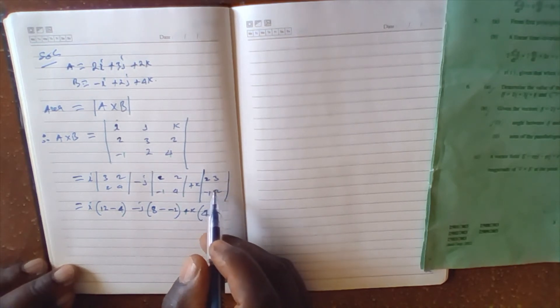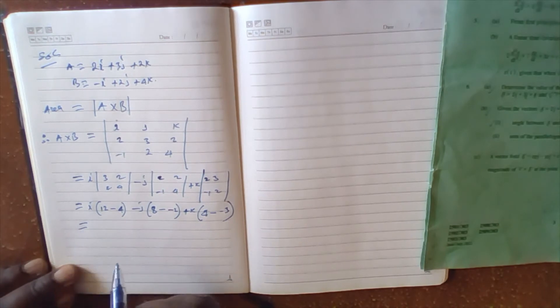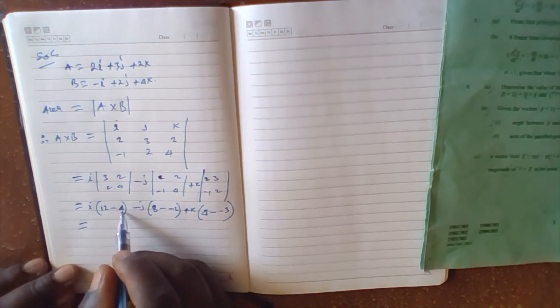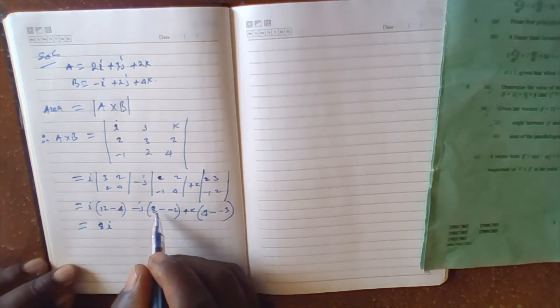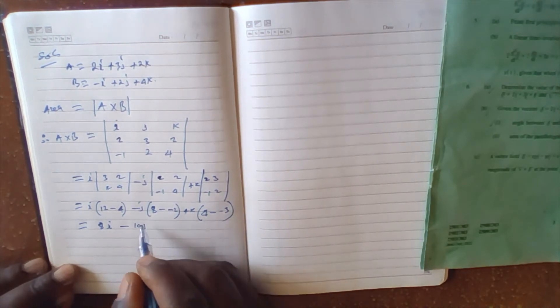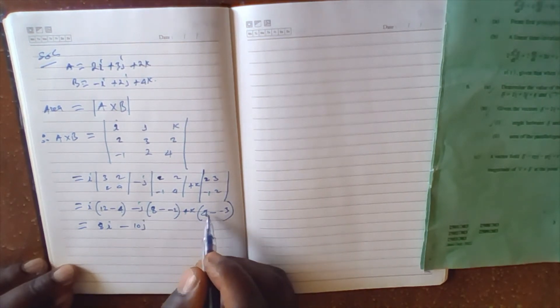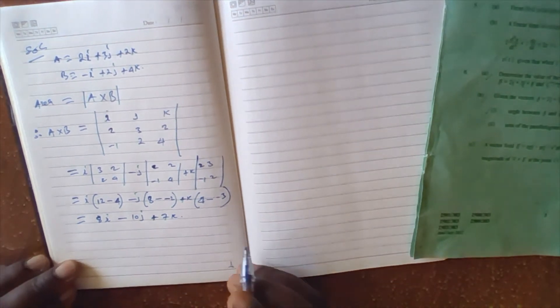This equals to 12 minus 4 equals 8, so this is 8i. Then minus, and minus becomes plus, so we have minus 10j, and then 4 minus negative 3, so it will be plus 7k.